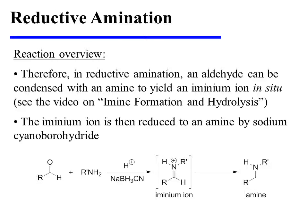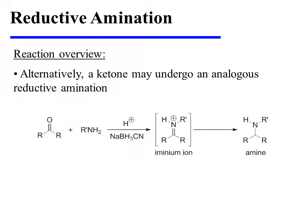Therefore, in reductive amination, an aldehyde can be condensed with an amine to yield an aminium ion in situ, and the aminium ion is then reduced to an amine by sodium cyanoborohydride. Alternatively, a ketone may undergo an analogous reductive amination, in which it is first converted to the aminium ion and then reduced in situ by sodium cyanoborohydride to provide the amine.